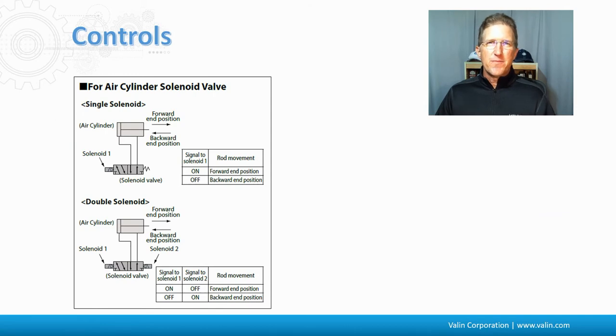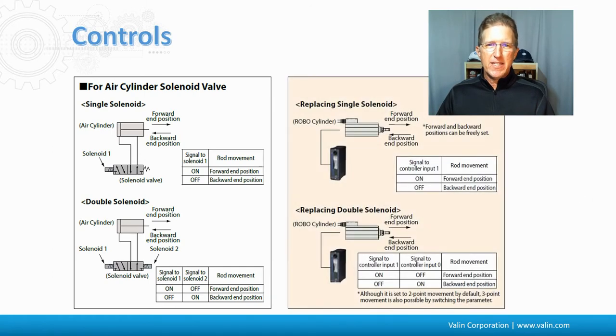First thing is the controls. How easy is it to replace the pneumatics with the electric? There are some manufacturers that actually make it pretty simple. Here is a diagram of using a single or double solenoid. One manufacturer shows how easy it is to change with their controls and actuators over to electric from pneumatics. So that part is actually not all that difficult. The logic can still be the same in the PLC. The wiring can be very similar or even the same.